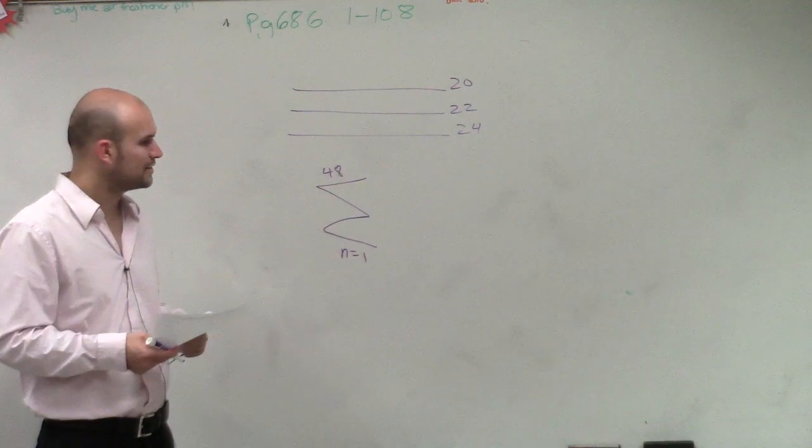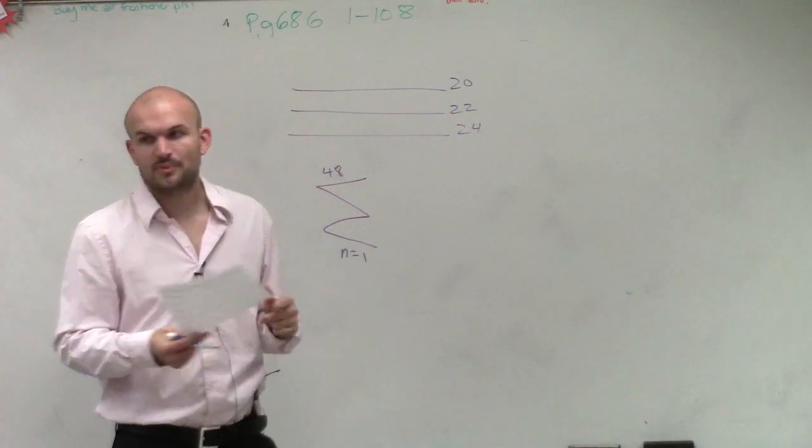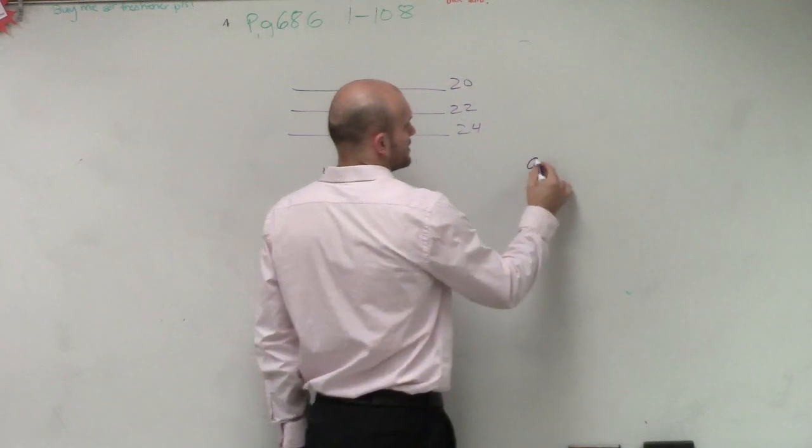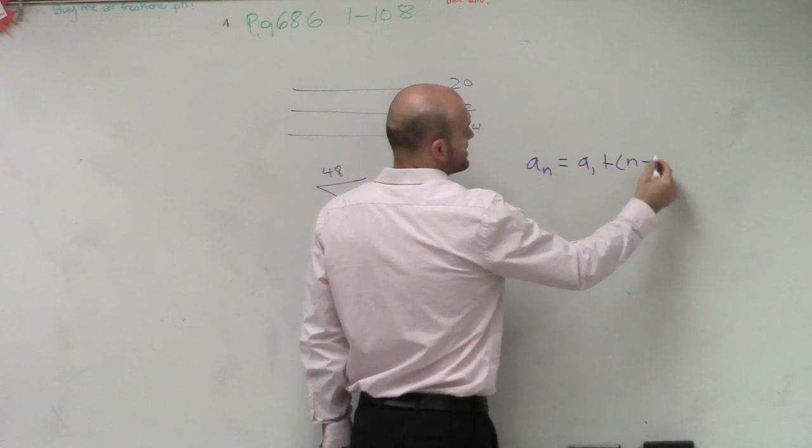But we need to figure out a rule. We didn't really go through this with you guys, but we need to figure out this rule. There's a couple different things we can do. One formula that we use, which I have over here, is a sub n equals a sub 1 plus n minus 1 times d.